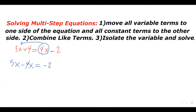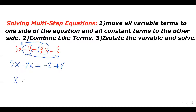I need to move this constant term from the left side to the right side as well. I have negative 4 — if I move this negative 4, which is a constant term, to the right side, it becomes positive 4. So step 1 is done. We moved all the variable terms to one side and all the constant terms to the other side. Now let's combine like terms: 5x minus 4x is just x, equals negative 2 plus 4, that's positive 2.